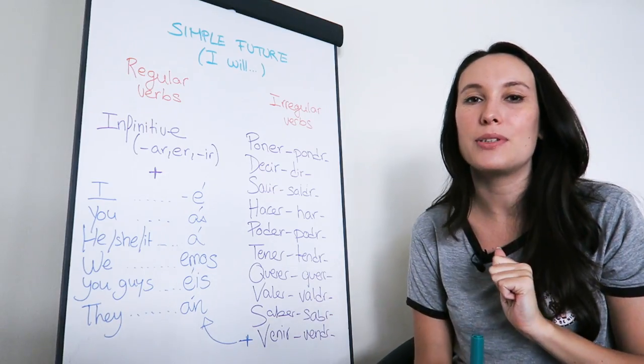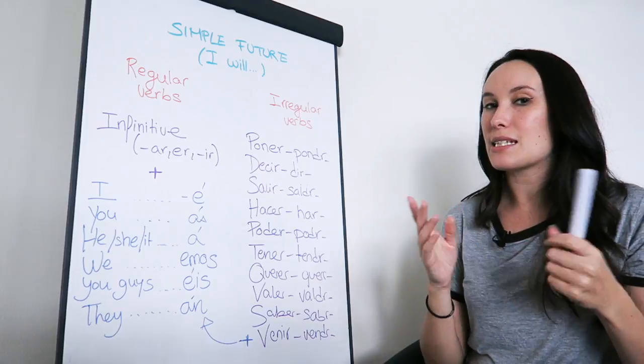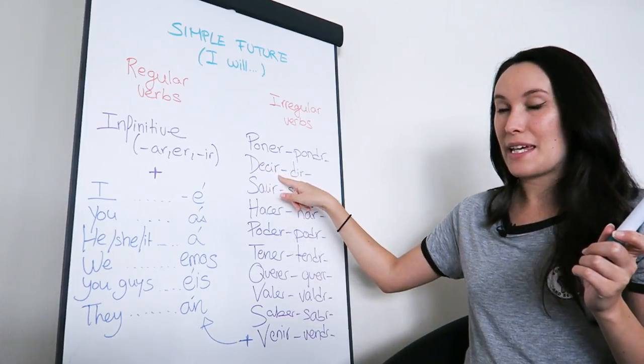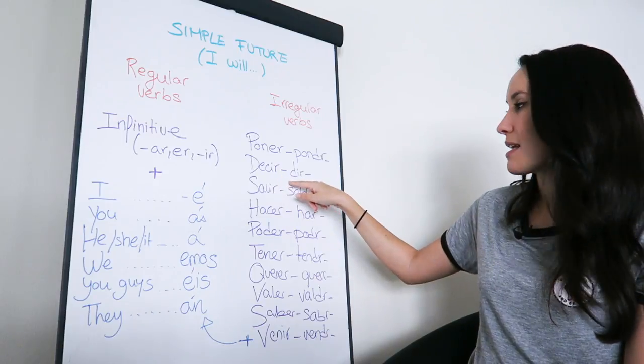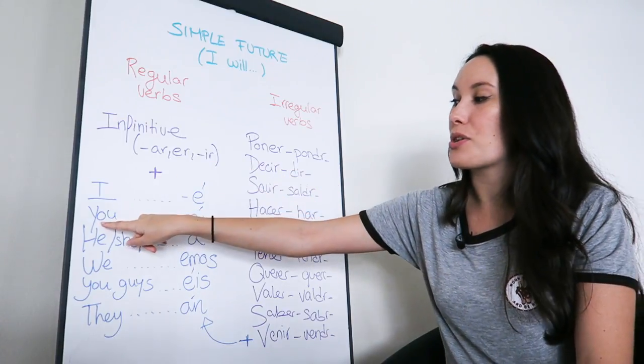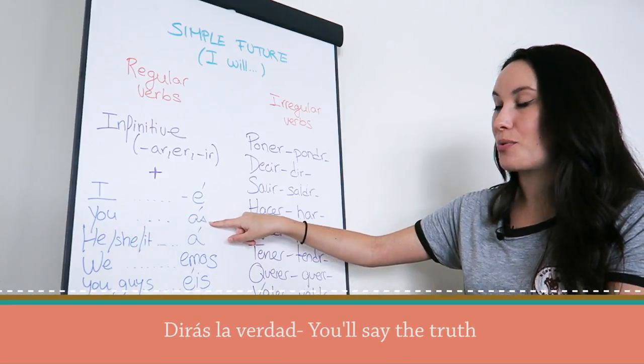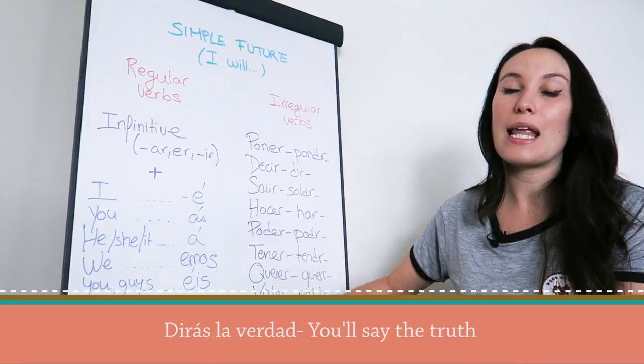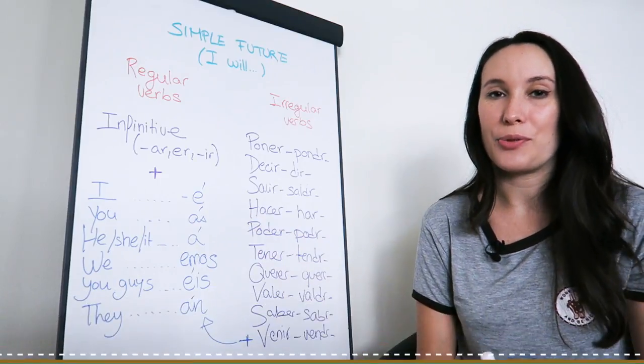So let's do just one more example with the irregular ones in a sentence. Decir is to say, it's here. Dir is the irregular form. I'm going to use this and put it together with the U form. So dirás, you will say. Dirás la verdad, you will say the truth.